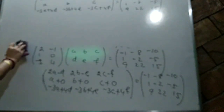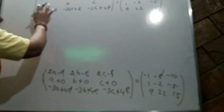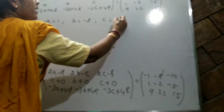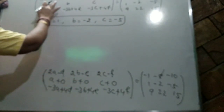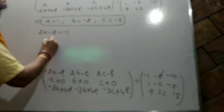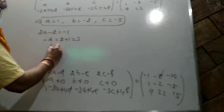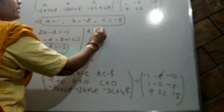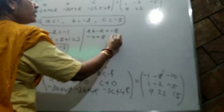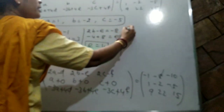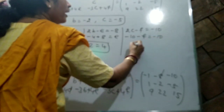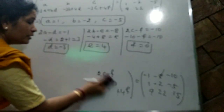Equating the second row: A=1, B=-2, C=-5. From the first row: 2A-D=-1 gives 2-D=-1, so D=-3. From 2B-E=-8: -4-E=-8, so E=4. From 2C-F=-10: -10-F=-10, so F=0. Therefore A equals [1,-2,-5; -3,4,0], order 3×2.